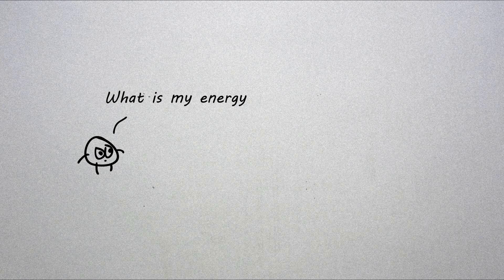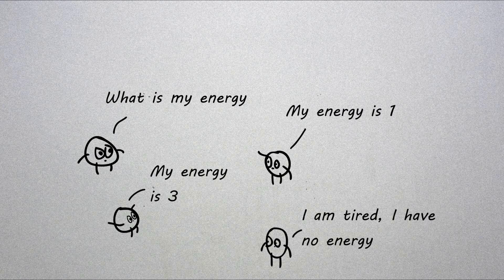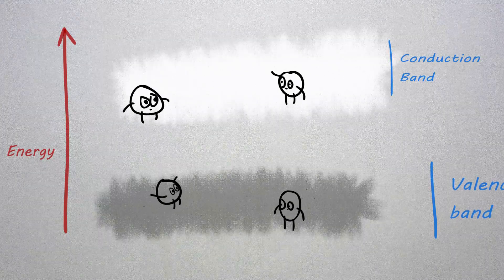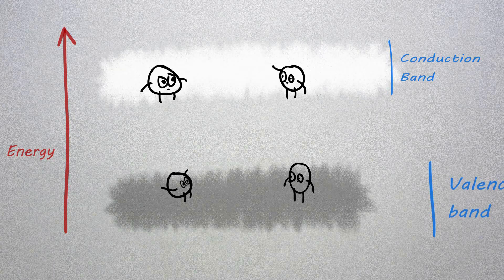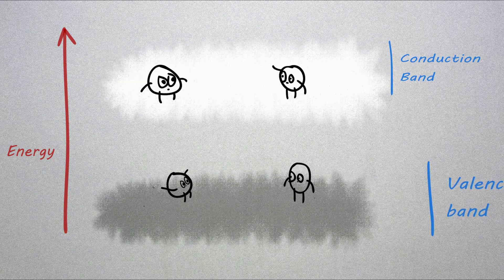Rather than having distinct energies as with the case of free atoms, the energy states which are available form bands. The conduction band is a band of electron orbitals that electrons can bounce up into from the valence band when energized.